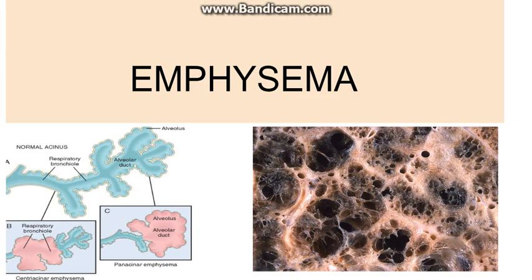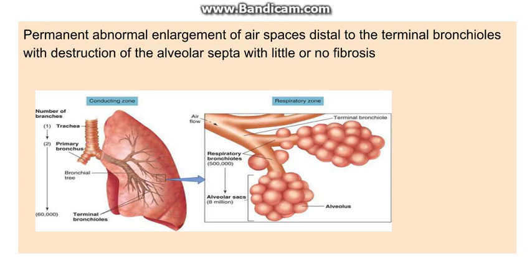In this video we will discuss emphysema. Before the definition, let's look at the conducting zone and the respiratory zone of the lung. The conducting zone comprises the trachea, primary and secondary bronchus. The respiratory zone is distal to the terminal bronchioles and comprises respiratory bronchioles, alveolar ducts, and alveolar sacs. Emphysema only involves the respiratory zone, where gas exchange takes place.